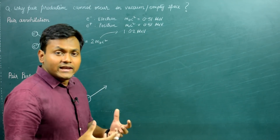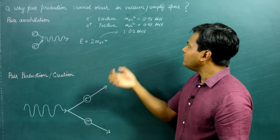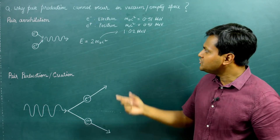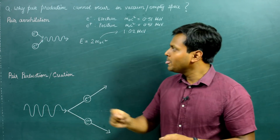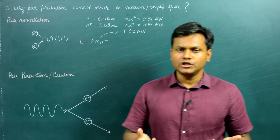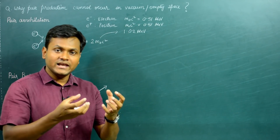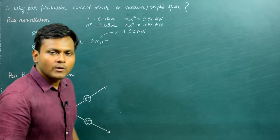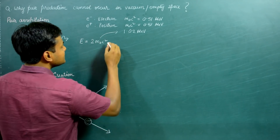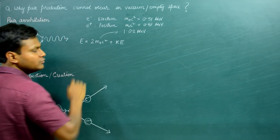The annihilation of an electron-positron pair will yield a minimum of 1.02 MeV. However, the energy could be greater if the particles initially had some kinetic energy due to their motion. The kinetic energy of the electron and positron before annihilation gets added to the total energy released during annihilation, adding to the rest mass energy of the released photon.